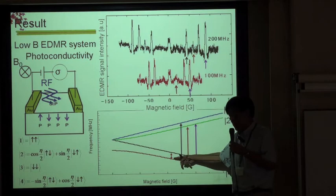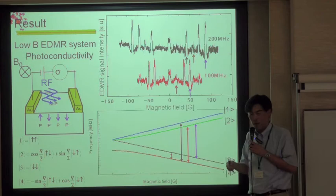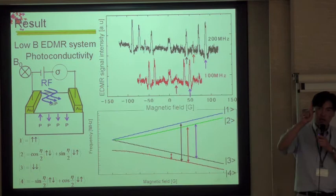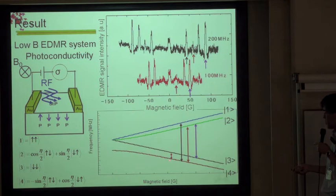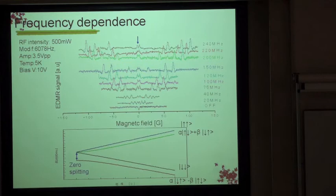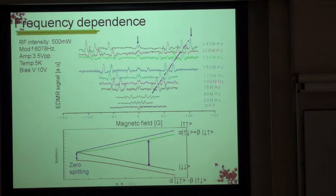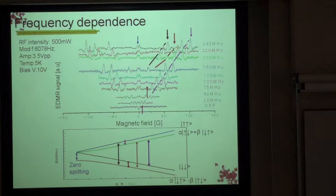Usually the transition between the two middle levels corresponds to NMR — just flipping of nuclear spins. However, in our case, the red level is a superposition of |up,down⟩ and |down,up⟩, so what we are detecting is not just NMR but also electron spin resonance. We performed similar measurements with 20 MHz all the way to 240 MHz irradiation, and we see a clear change in peak position, showing that we have observed transitions between all the different levels.